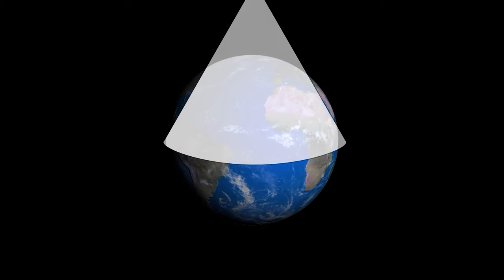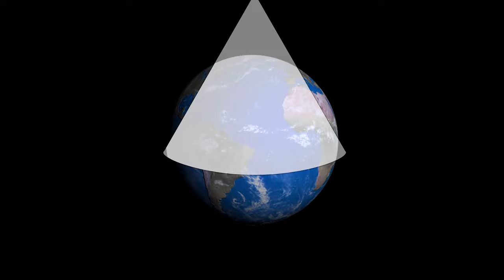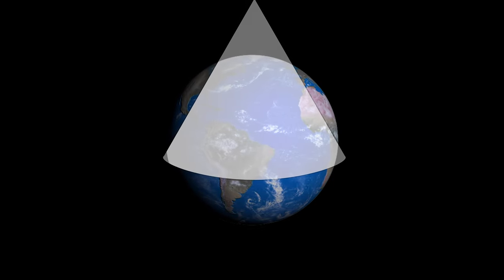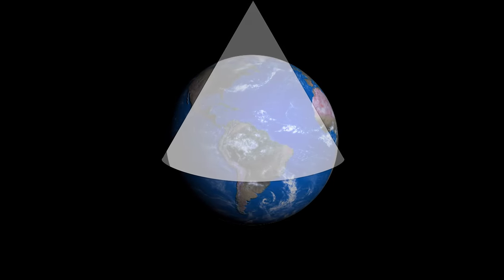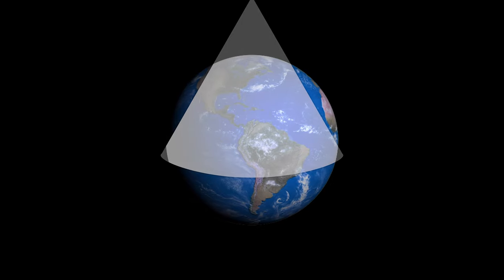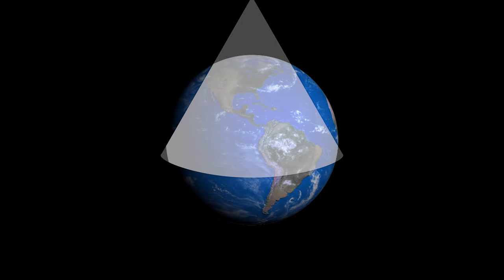Albers introduced this map projection in 1805 with standard parallels. As the name states, the purpose was to project all areas on the map proportionally to all areas on Earth.